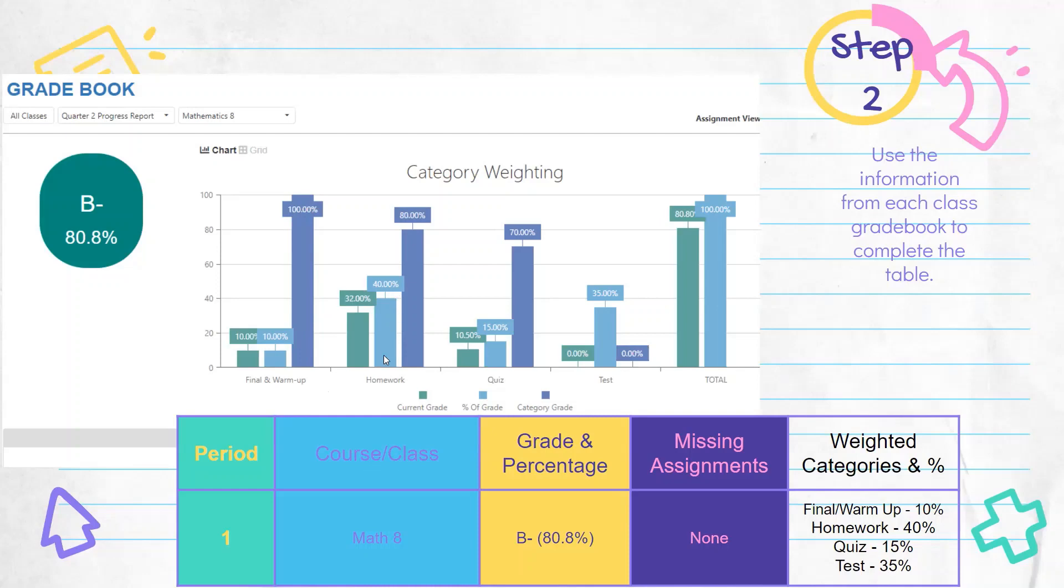Homework is 40%. So this blue column here is telling you the percent of the grade. This student has about 32% of those points completed. And as a result has 80% in the homework category. So a B for homework. And then quizzes are 15% of the grade. This student only has about 10.5%, which gives the student a 70% for quizzes. The average of those three is what gives the student an 80%.